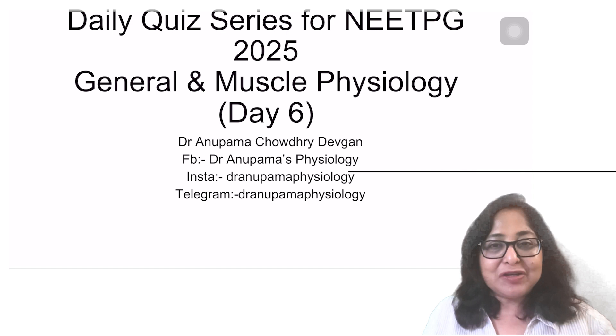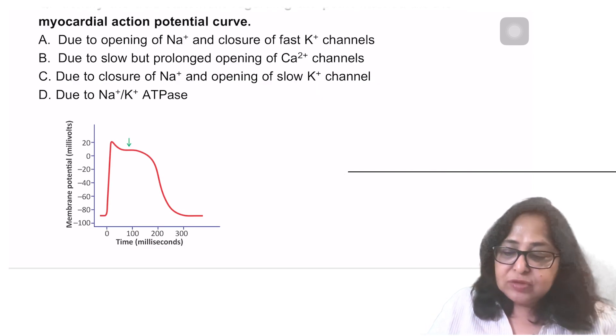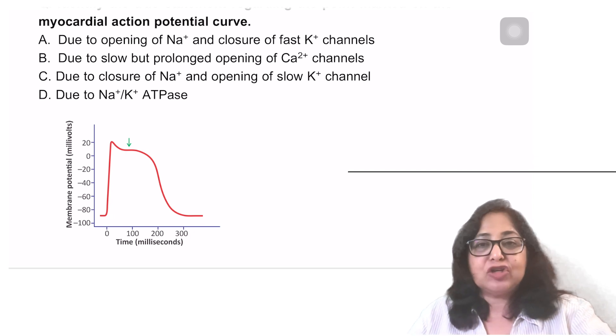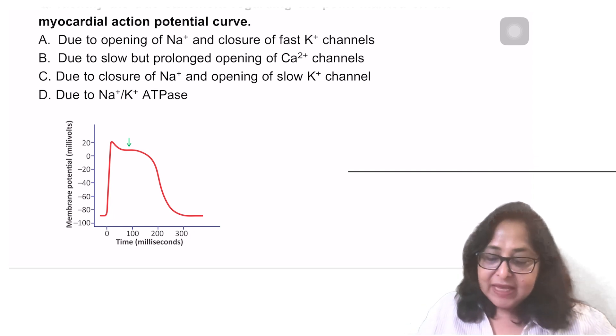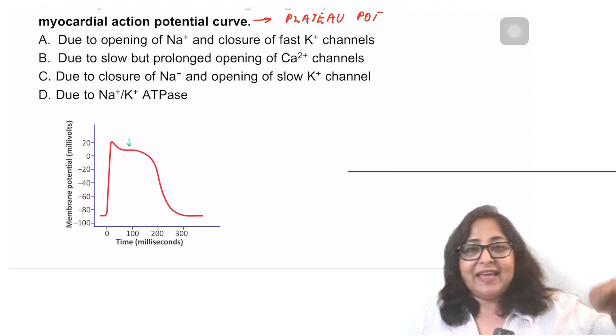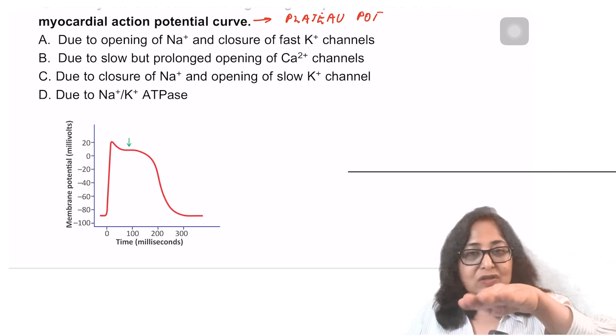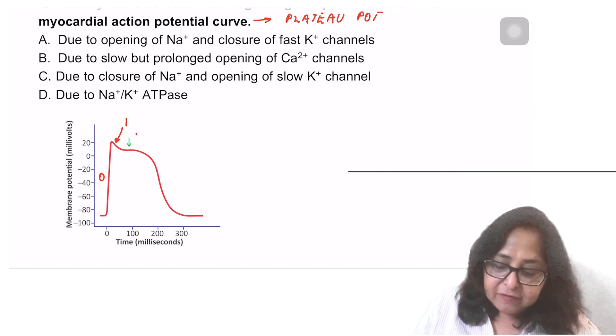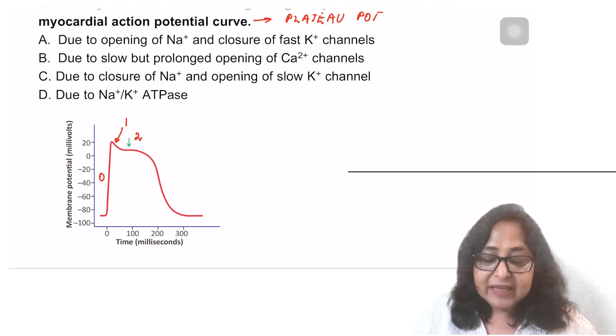Let's look at the first question. It says identify the true statement regarding the point marked on the myocardial action potential. The myocardial action potential curve, this is known as the plateau potential. As you can see in the diagram, there is a plateau phase, a horizontal phase. There are five phases in the plateau potential: phase 0, phase 1, phase 2 which is marked in the image, phase 3 and phase 4.